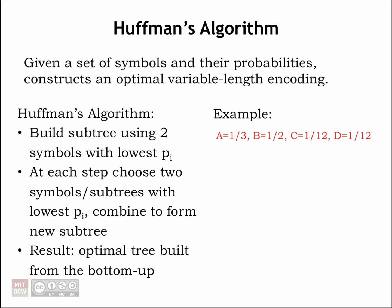Given a set of symbols and their probabilities, Huffman's algorithm tells us how to construct an optimal variable length encoding. By optimal we mean that, assuming we're encoding each symbol one at a time, no other variable length code will have a shorter expected length.